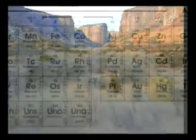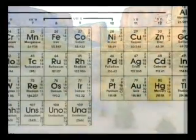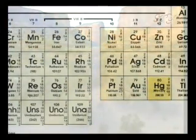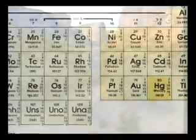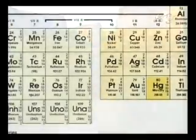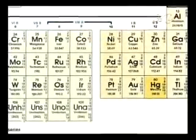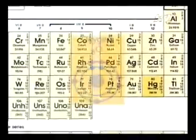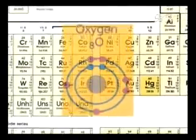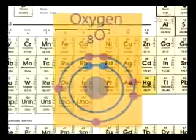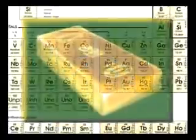There are 109 elements on earth. Some of these elements are very familiar to us, such as oxygen, hydrogen, gold and copper.